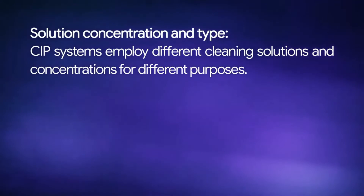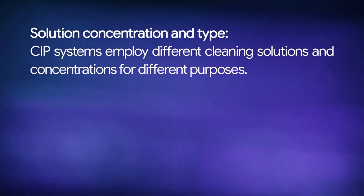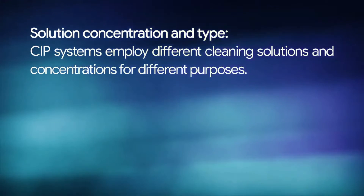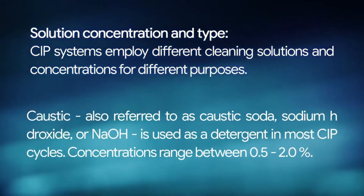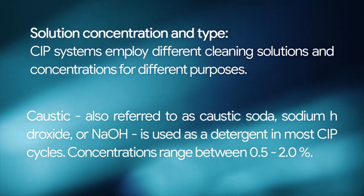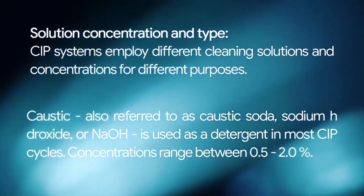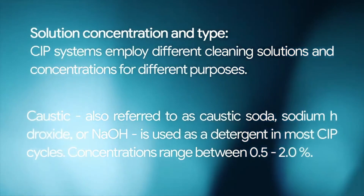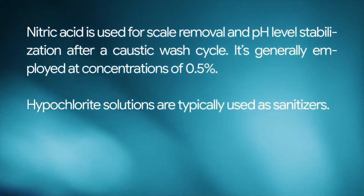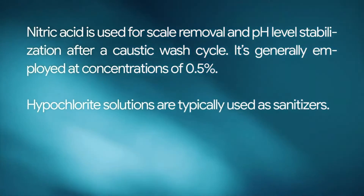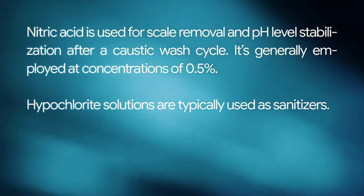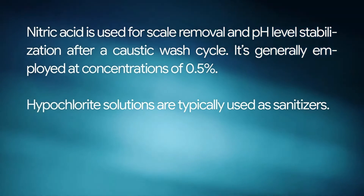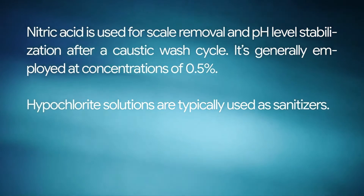Solution concentration and type: CIP systems employ different cleaning solutions and concentrations for different purposes. Caustic, also referred to as caustic soda, sodium hydroxide, or NaOH, is used as a detergent in most CIP cycles at concentrations ranging between 0.5 to 2.0 percent. Nitric acid is used for scale removal and pH level stabilization after a caustic wash cycle, generally at concentrations of 0.5 percent. Hypochlorite solutions are typically used as sanitizers.